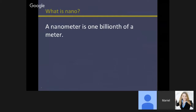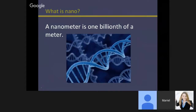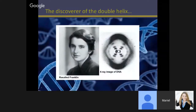Just for anyone who may not know: nano is one billionth, so a nanometer is one billionth of a meter. That's easy to say but hard to understand. DNA is two nanometers wide, though that's still a little hard to conceptualize. While we're talking about DNA, I want to note that the discoverer of the double helix was not Watson and Crick — it was Rosalind Franklin with her X-ray diffraction images of DNA. They wrote the paper and got the Nobel Prize for it.